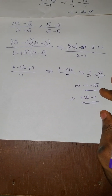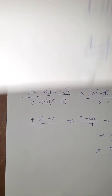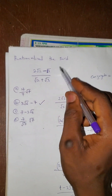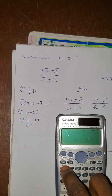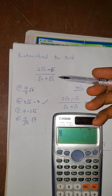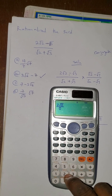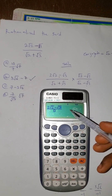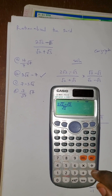Now let me get to the calculator method. For the calculator method, assuming you are given this question, you don't need to solve it manually first. Press the fraction button: at the numerator enter 2, then root of 2, press the forward direction, then minus root 3 — pressing forward so that minus √3 is not under the square root of 2. Then go to the denominator: enter √2 plus √3.